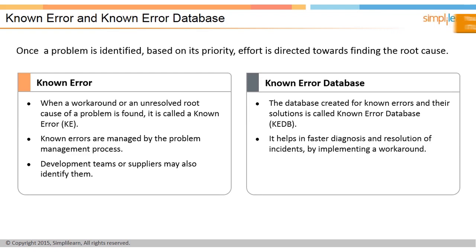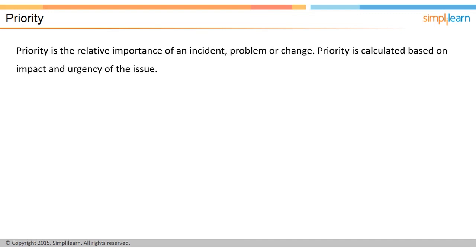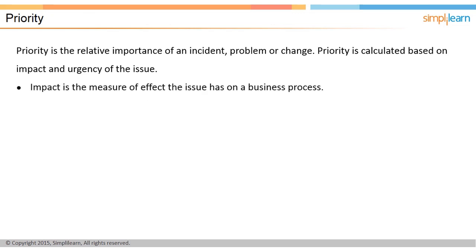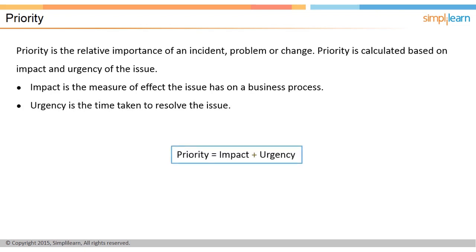Priority means the relative importance of an incident, problem, or change. It is used to identify required times for action to be taken — for example, the Service Level Agreement or SLA may state that priority-two incidents must be resolved within 12 hours. Priority is calculated based on the impact and urgency of the issue. Impact is the measure of the effect the issue has on the business processes or IT service support. Urgency is how soon the issue can be handled. Priority equals impact plus urgency.